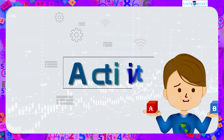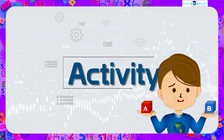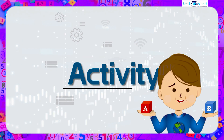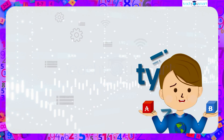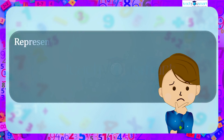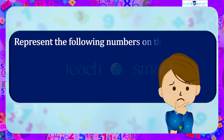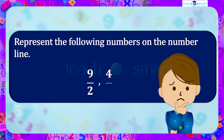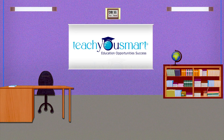Before winding up, let's check how much you understood by doing an activity. Represent the following numbers on a number line: 9/2, 4/9, and -13/7. That's all for now. See you all in the next class. Thank you.